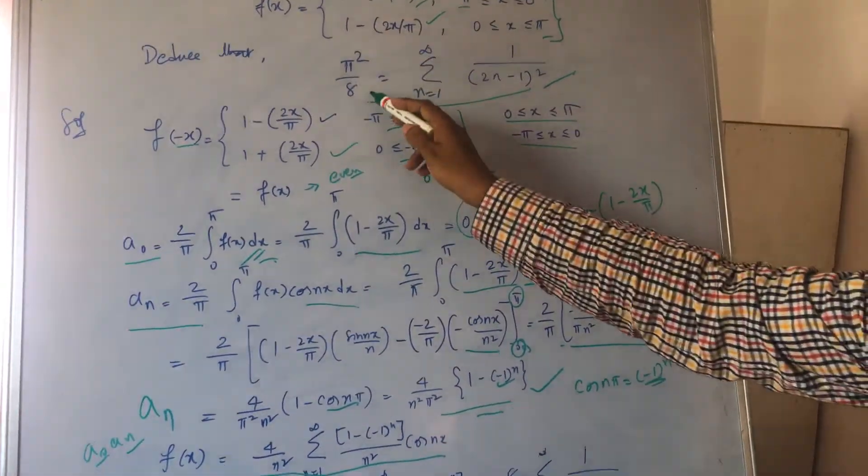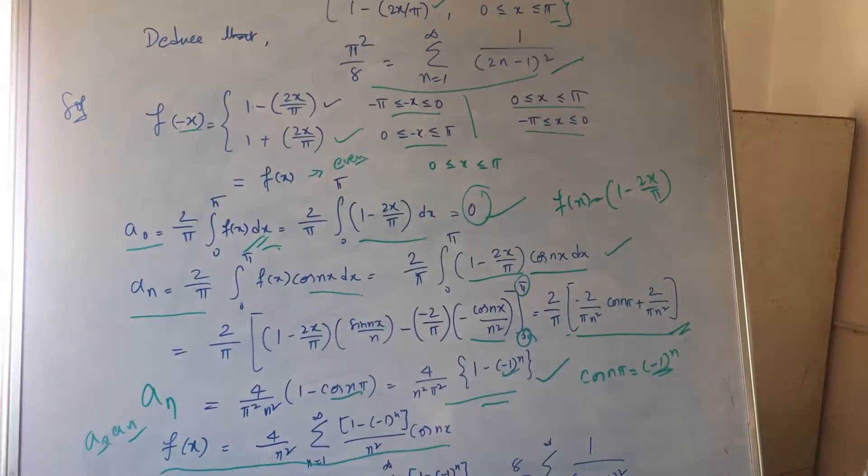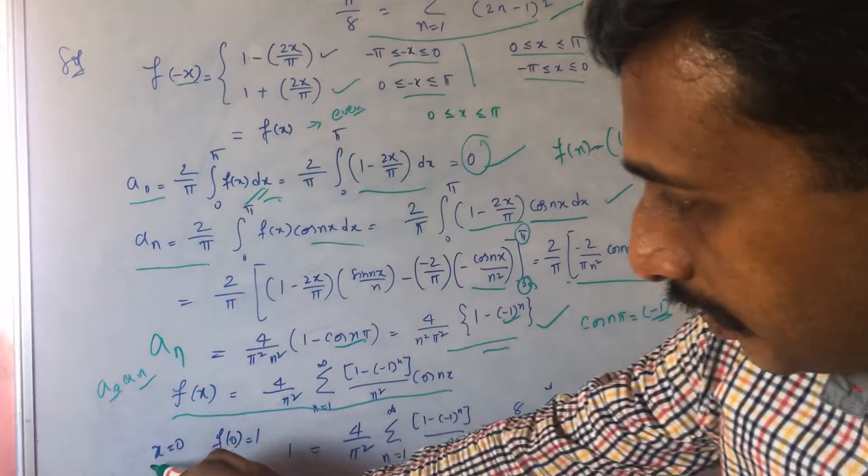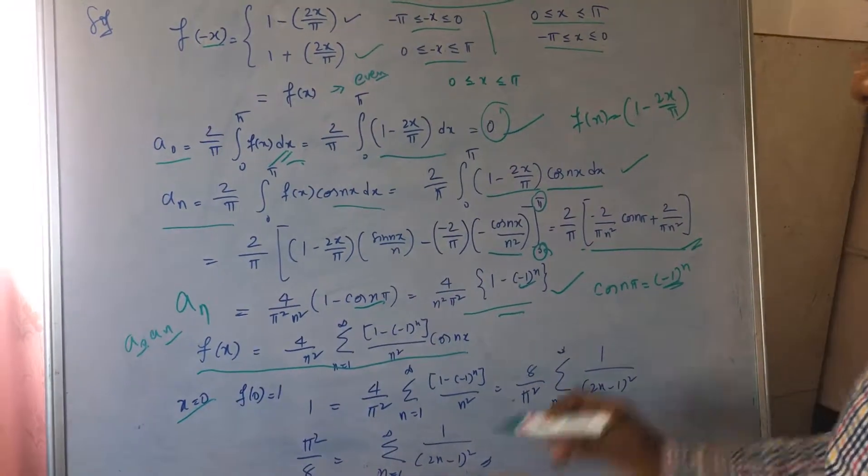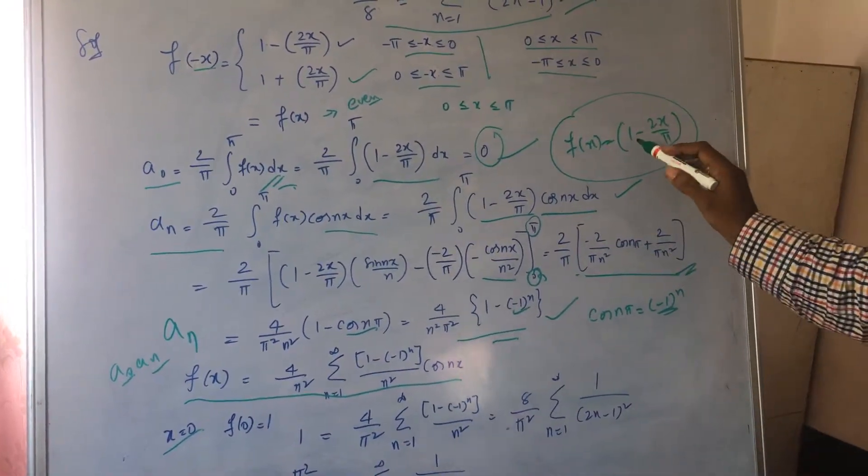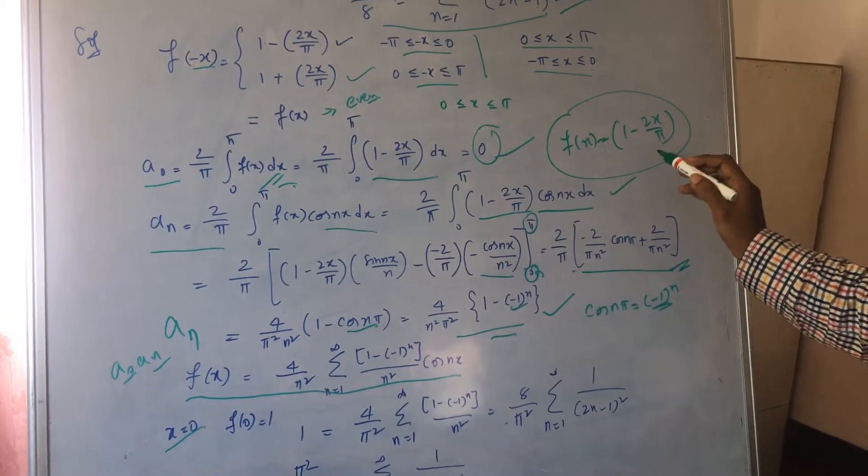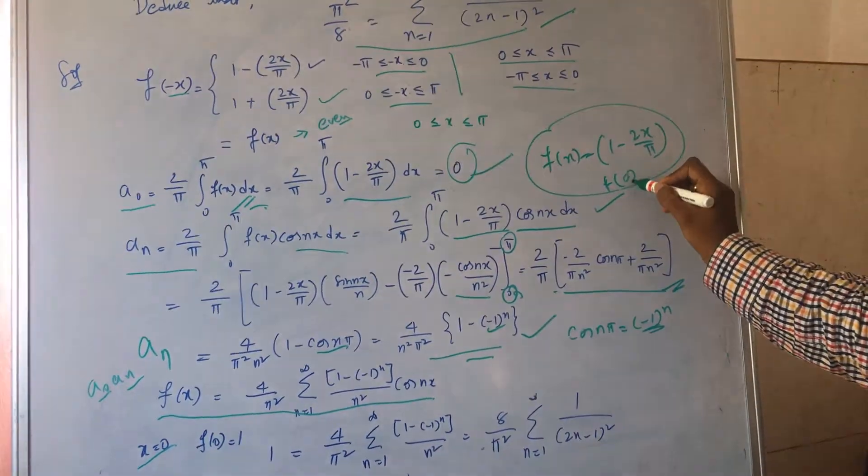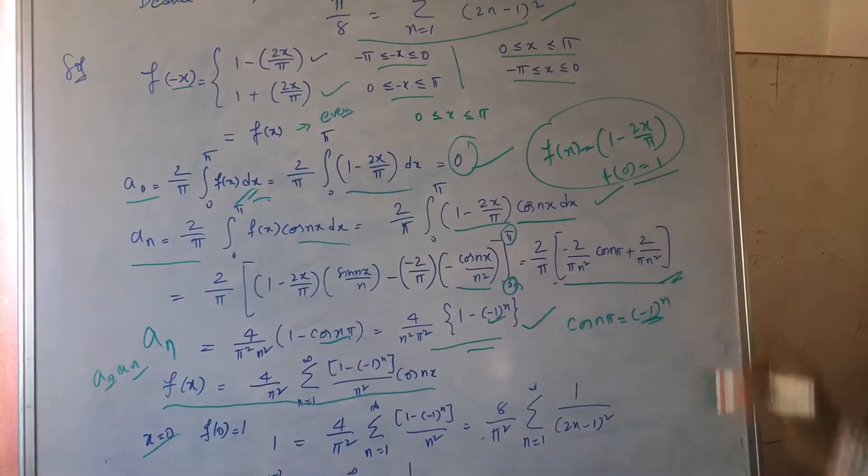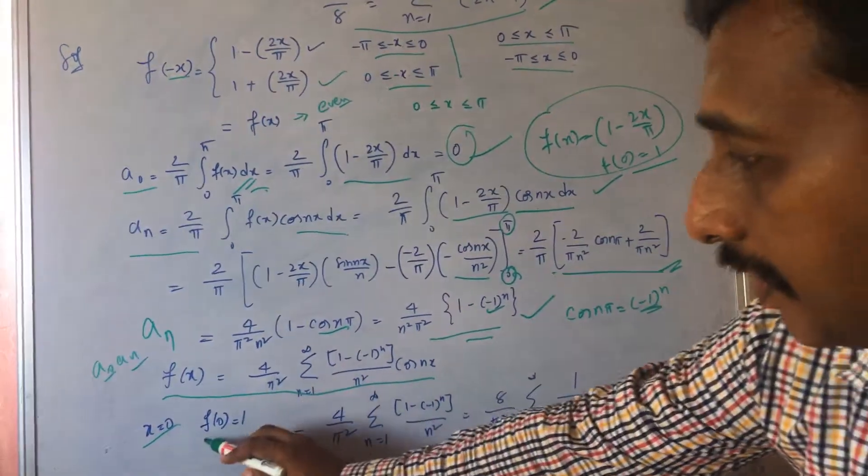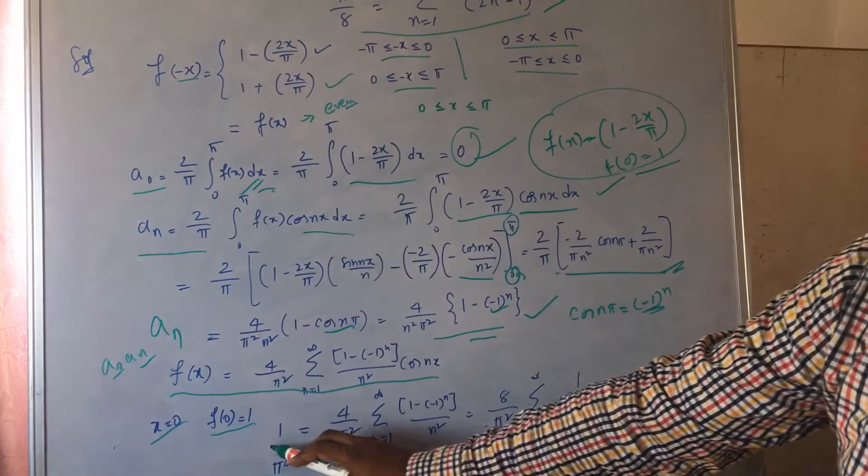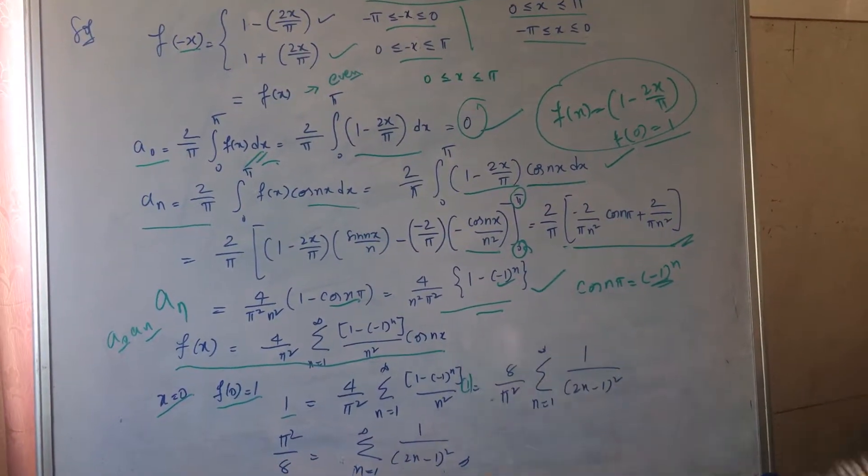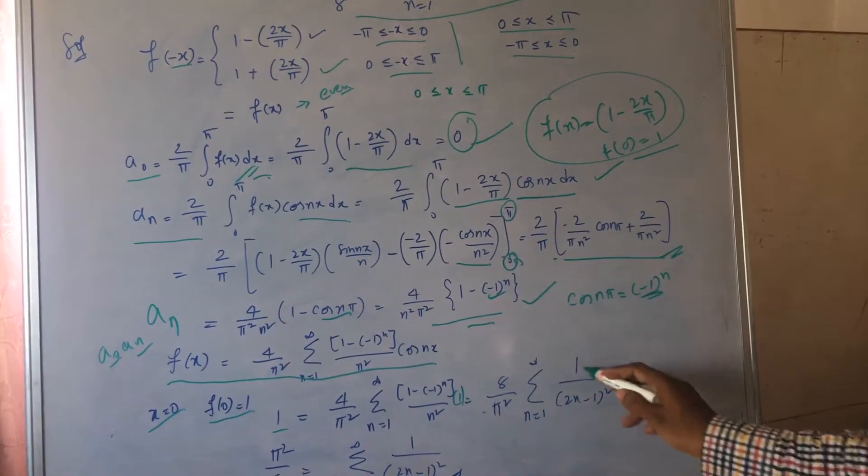Hence, you have to deduce this in π² by 8. That's the problem now. How do we deduce it? When you put x is equal to 0, where will you put it? The function which is f(x) is equal to 1 minus 2x by π. When you put x is equal to 0, this becomes 0 and you get 1 on the right hand side. Left hand side you have 1 and cos 0 is 1. When I expand this, I get this.